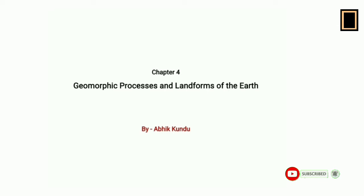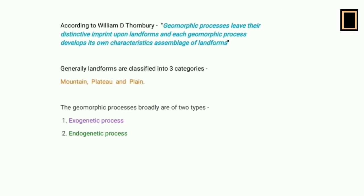All these geomorphic processes have their clear distinctive imprints on the earth's surface. According to W.D. Thornbury, geomorphic processes always have clear distinctive imprints on the earth's surface, and by these imprints we can easily separate them from one another. There are different types of geomorphic processes, each categorized according to their nature of work, nature of activity, and the processes involved.